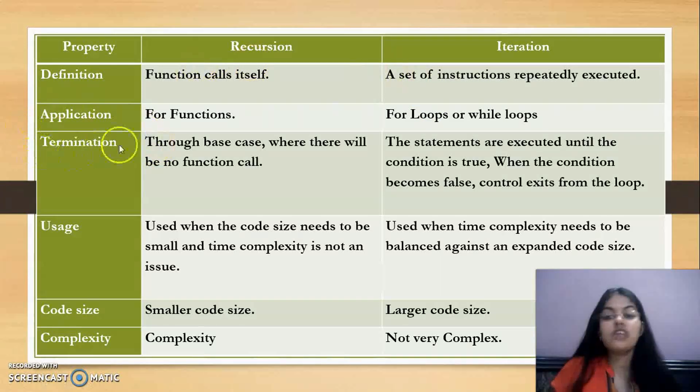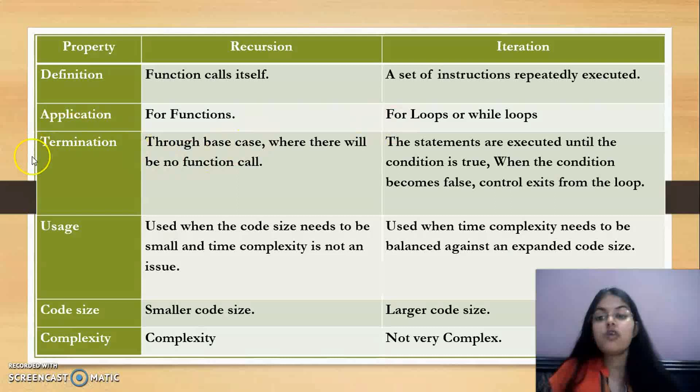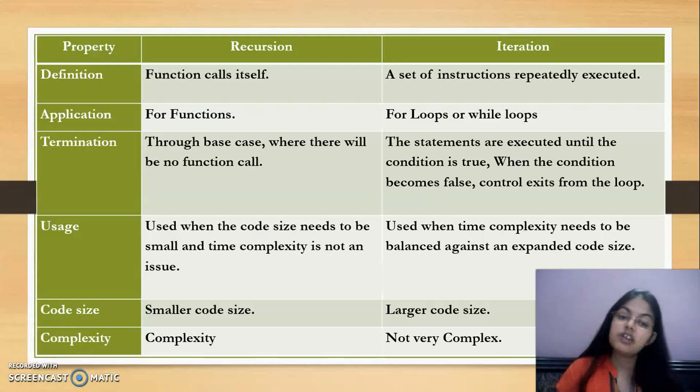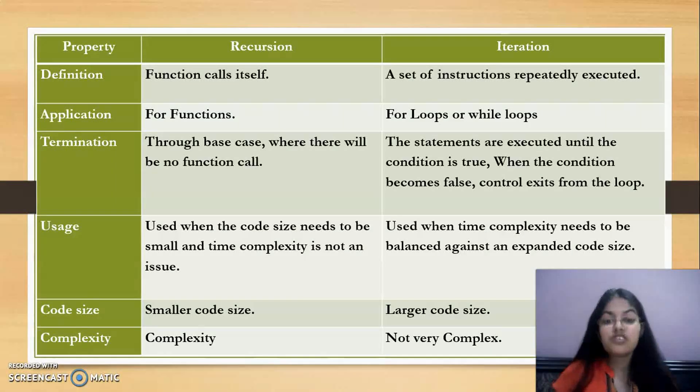Application means where we use them. Recursion is used in function cases, and iteration is used for loops or while loops, generally in looping cases. Termination means where it will end. In recursion it will end through base case where there will be no function call. The base case is your stopping condition. When you reach the base case, your recursion terminates. In iteration, as long as the condition is true, the loop will execute. As soon as the condition becomes false, it will exit the loop. So the termination condition in iteration is when the condition becomes false.